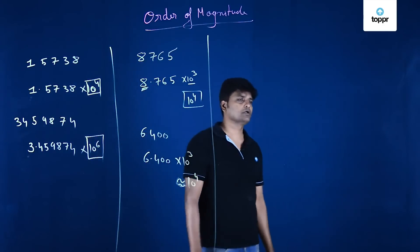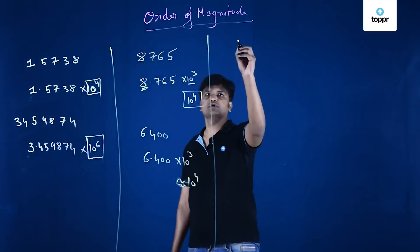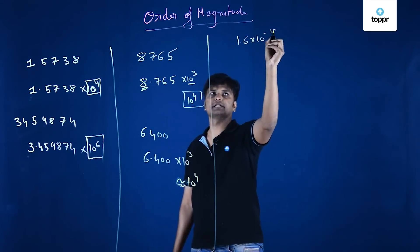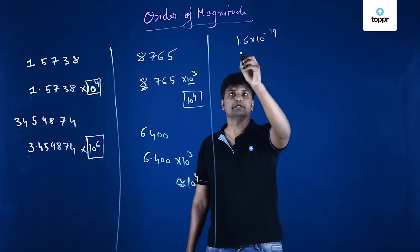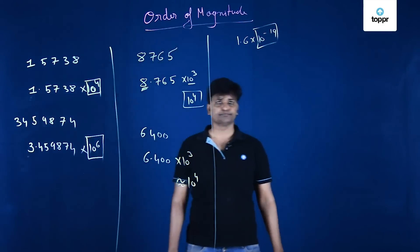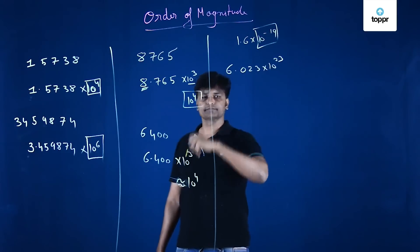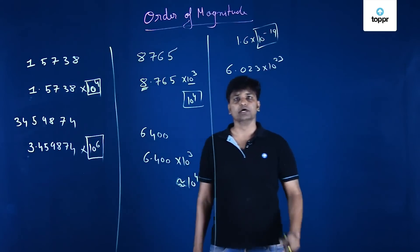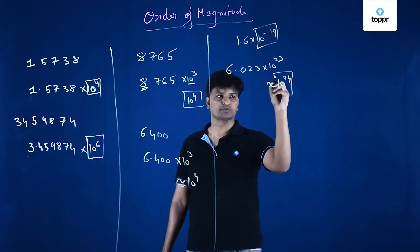What is the charge of an electron? The charge of the electron is 1.6 × 10^-19 coulombs. It is already in standard form, so the order of magnitude is 10^-19. Let us take Avogadro's number: 6.023 × 10^23. Here the leading digit is 6, which is greater than 5, so the order of magnitude is 10^24.